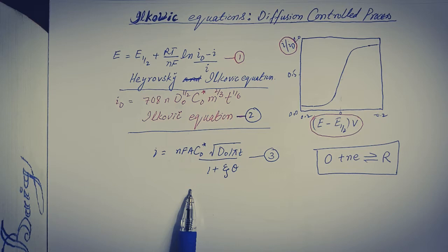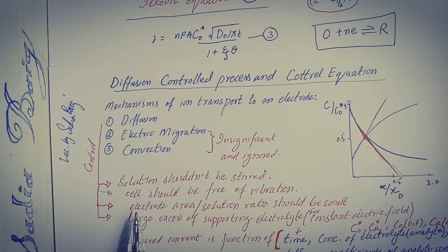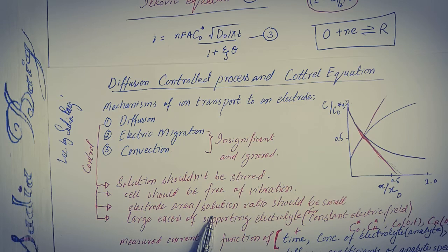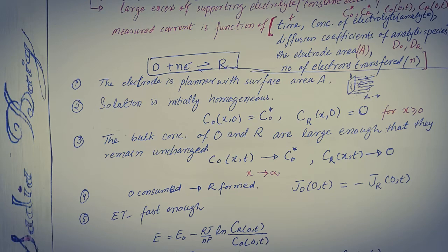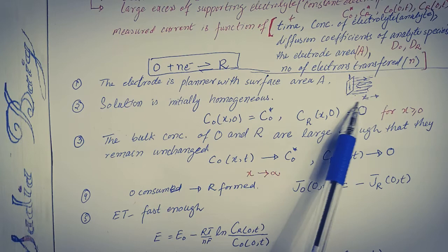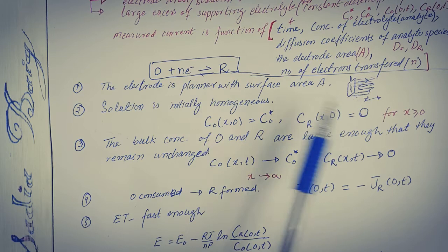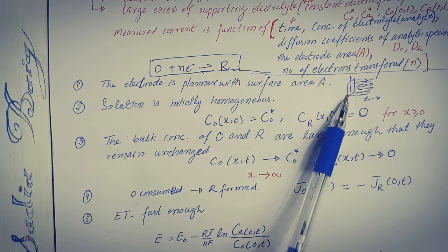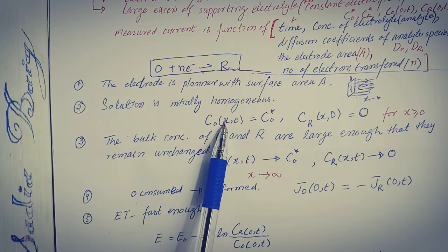Equation number three was derived in the previous lecture using the considerations for the development of the corporal equation. The considerations specified include: the solution should not be stirred, the cell should be free of vibration, the electrode area with respect to the solution must be small, a large excess of supporting electrolyte must be used, and the electrode is planar with surface area A. The distance x is the linear perpendicular distance from the surface area of the electrode.